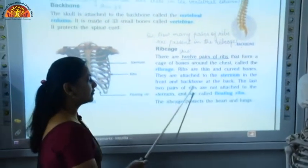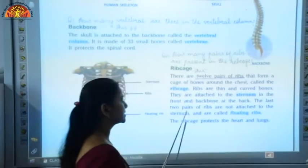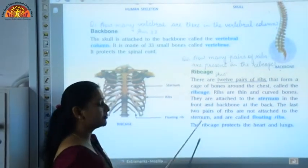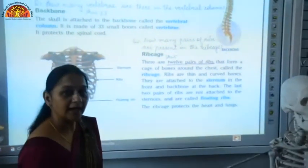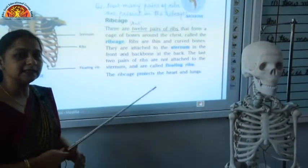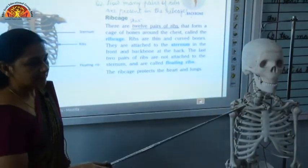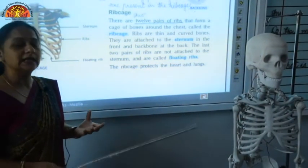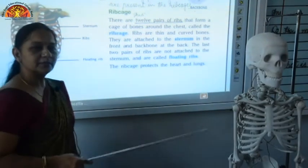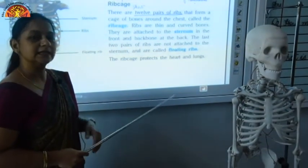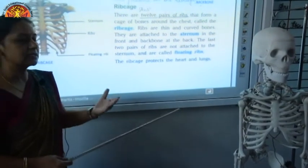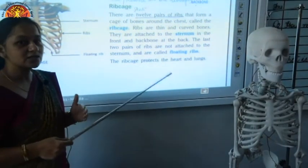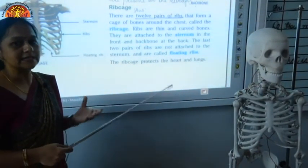The last 2 pairs of ribs are not attached to the sternum and are called the floating ribs. The ribcage protects the heart and lungs. The skull protects the brain, the ribcage protects the delicate organs inside like your heart and lungs, and the vertebral column protects the spinal cord.